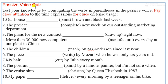Now students, please try to do this exercise. Test your knowledge by conjugating the verbs in parentheses in the passive voice. Pay close attention to the time expressions — last week, next week, right now, every day, last year, when he was only six years old, every month, in 1987, every morning. These time expressions are clues for the correct tense to use.